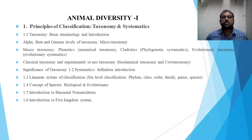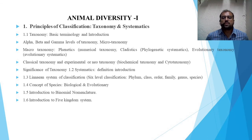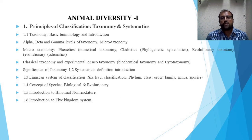The second sub-bit is systematics — its definition and introduction. The third sub-bit is the Linnaean system of classification, which includes six levels of classification: phylum, class, order, family, genus, and species. The fourth sub-bit is the concept of species, which includes the biological and evolutionary species concepts, then introduction to binomial nomenclature, that is the two-naming system.